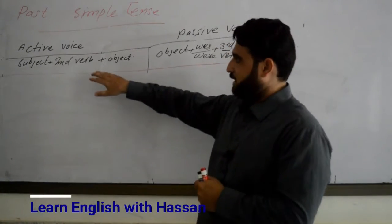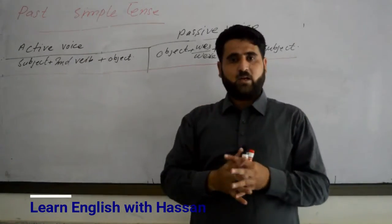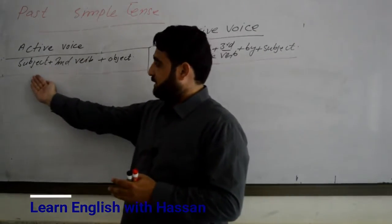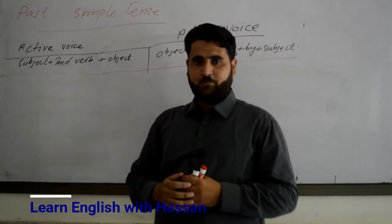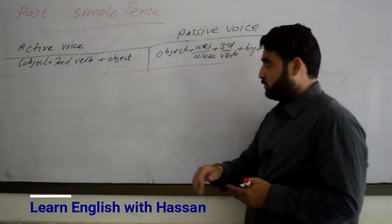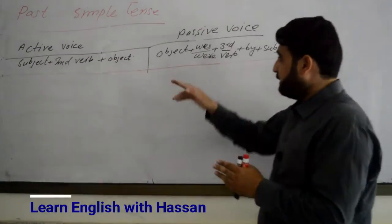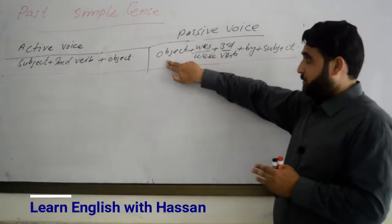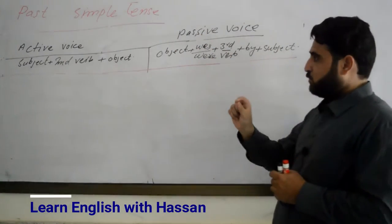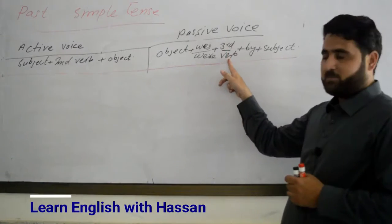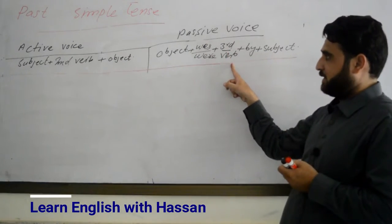सबसे पहले आप Structure को देखिए. Past Simple का Active Voice में Structure जो है वो Subject है, Second Form of Verb है और Object है. जब ये Passive को चेंज होगा तो Object और Subject एक दूसरे के साथ जगह चेंज करेगा — Object यहाँ पे आजाएगा और Subject यहाँ पे आएगा. दूसरा Verb Form चेंज होगा — Active में Second Form है, Passive में Third Form लगेगा.